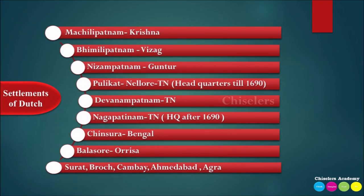The first factory was located in Andhra Pradesh. From there, their settlements expanded. The third factory was on the Krishna River (Masulipatnam area). The second factory was at Nizampatnam. Pulicat is in Tamil Nadu. In 1690, Pulicat became their capital and main trading center.